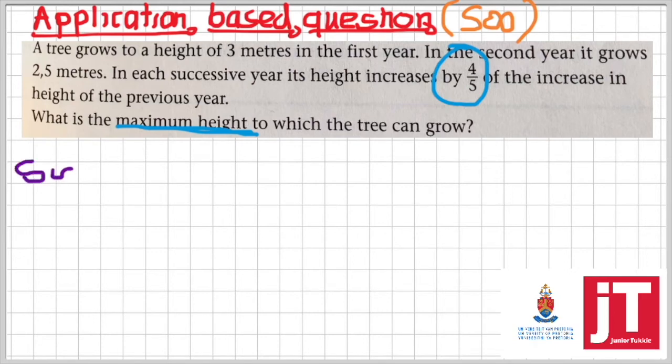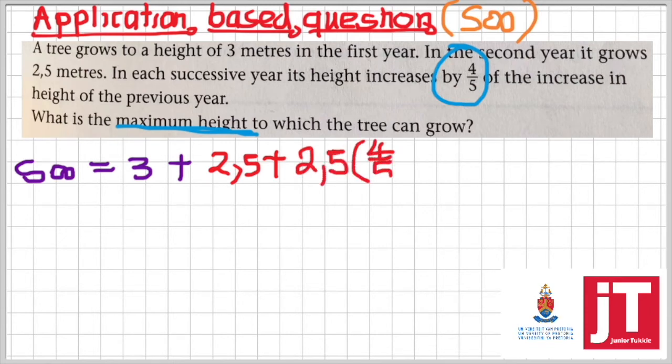So I'll say sum to infinity will be equal to 3 plus 2.5 plus 2.5 times 4 over 5 to the power 2 plus and so on up to infinity. We need to calculate our common ratio by saying R is equals to T2 over T1.